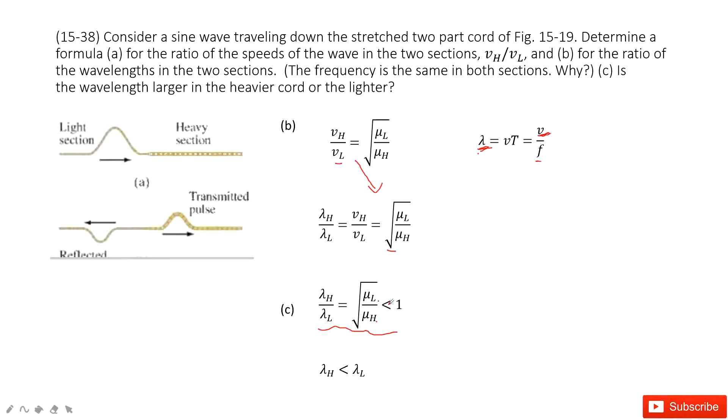And this is smaller than 1, which makes lambda H smaller than lambda L. So that makes the wavelength in the heavier chord smaller than the wavelength in the lighter part.